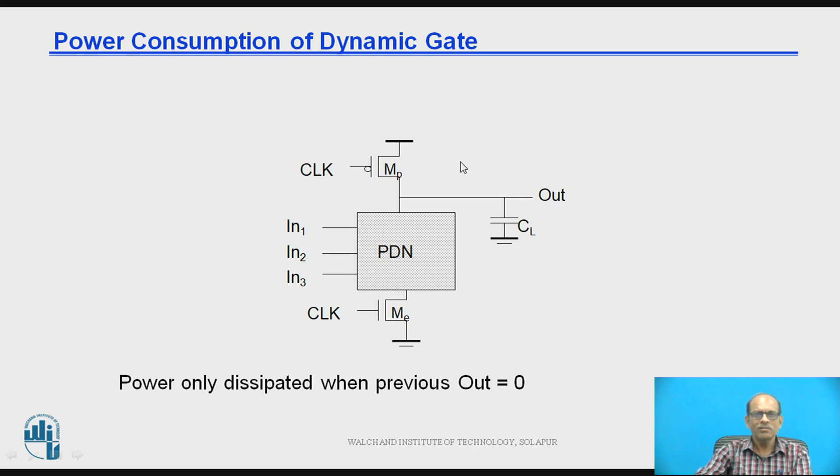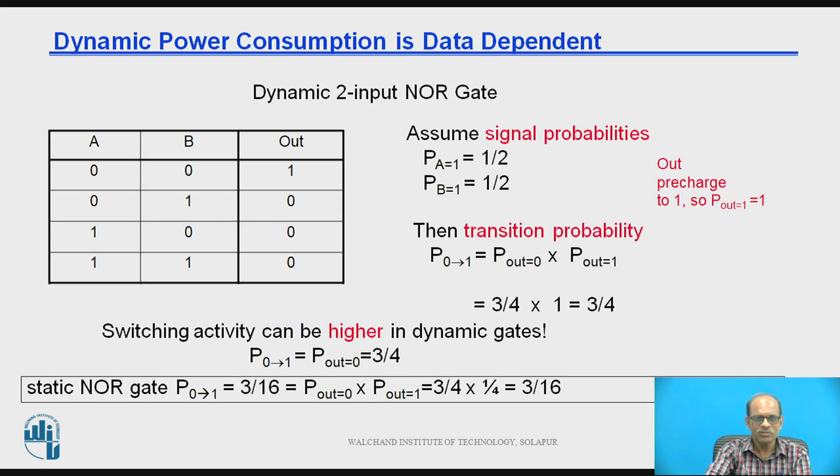Now next point is the power consumption of the dynamic gate. So power is only dissipated when the previous output is 0. When previous output is 0, then only the precharge consume the power.